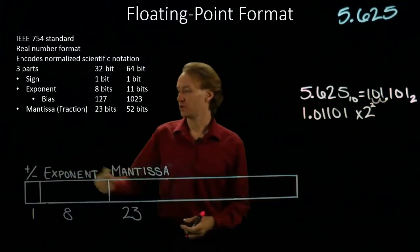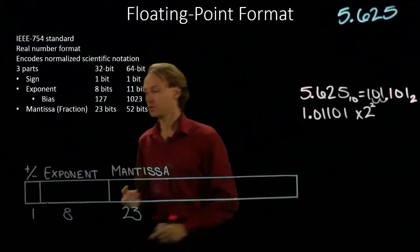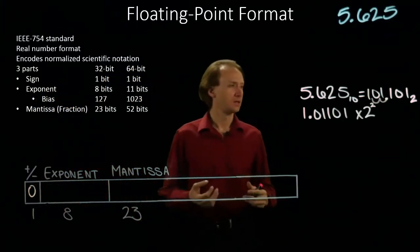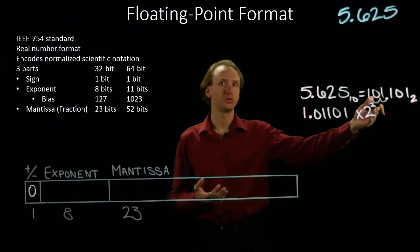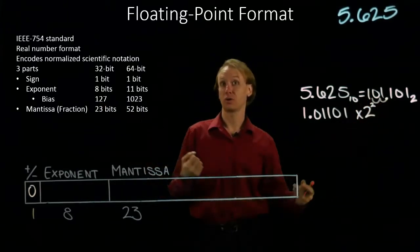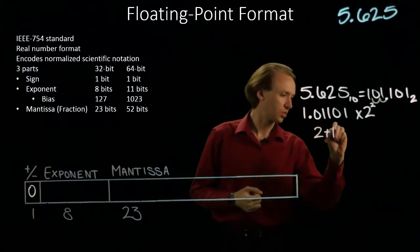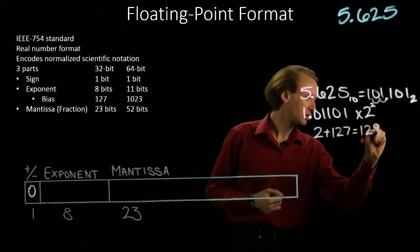Now I get to fill in all of these fields. 5.625 is a positive number, so my sign bit is a zero. Next, I need an exponent. My exponent is 2, but I have a bias of 127. So 2 plus 127 is 129.